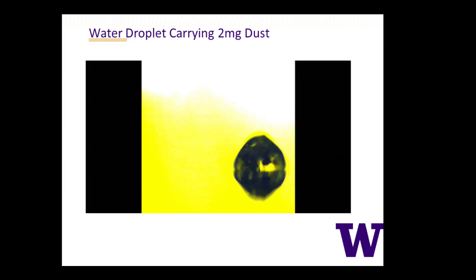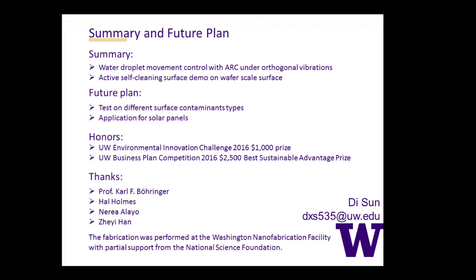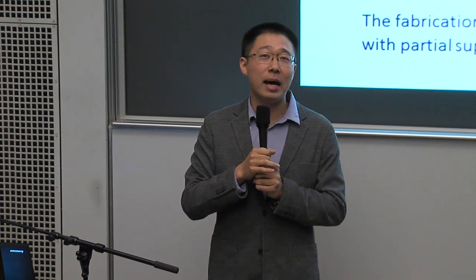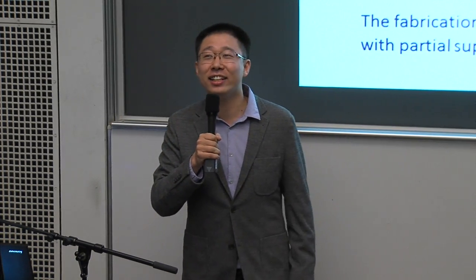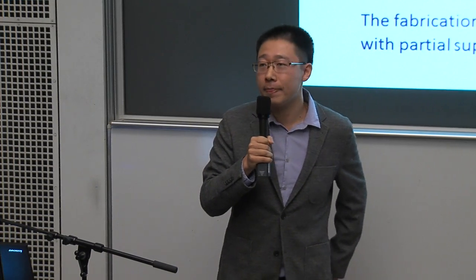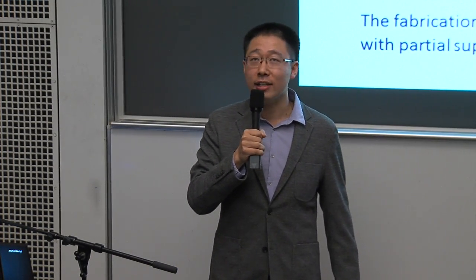Another demo shows a 10-microliter water droplet carrying 2 milligrams of sand, demonstrating the system's capability to clean sand particles. We want to apply this to solar panel applications, because dust and grain accumulation can reduce solar panel efficiency. With our system, we have the potential to continuously clean solar panels and boost efficiency. In summary, the asymmetric ratchet conveyor system controls water droplet movement. Future plans include testing different surface contaminants and focusing on solar panel applications. Thanks to my advisor Professor Karl Böhringer, lab mates, and the engineers at the Washington Nanofabrication Facility.